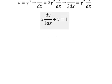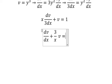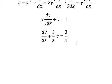Next, we divide both sides by x over 3. So we have dv over dx plus 3 over x times v equals 3 over x. We have original function and first derivative of the function. We can use integrating factor.